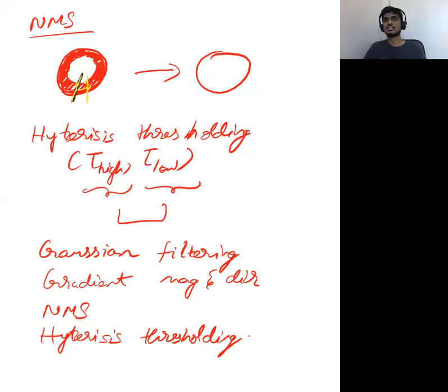Canny edge detection algorithm has become so famous mainly because of NMS and Hysteresis Thresholding. The code is open source, that's another plus point, and it's been there for around 30 years or so. Now there are learning-based edge detection algorithms which have overtaken Canny edge detectors and give much better performance, but there are various trade-offs in using the learning-based algorithms. So I think this is it about the brief introduction to Canny edge detection algorithm. Thank you.